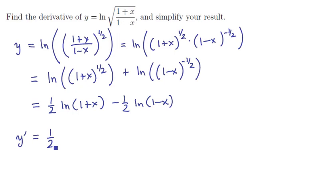So on the first piece, the 1 half comes along for the ride. We have to use the chain rule here. The derivative of ln of blank is 1 over blank times the derivative of blank. The blank is 1 plus x, and the derivative of that is 1.